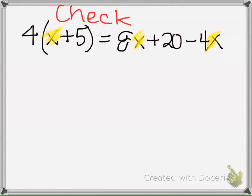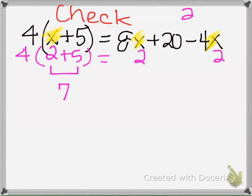So I'm going to randomly pick a number, I'm going to pick 2. So I'm going to put a 2 here for x, a 2 here for x, and a 2 here for x. And now I'm going to simplify each side. So here we have parentheses first, so 2 plus 5 is 7. And then this 4 is next to the parentheses, so it means times. So we get 28 on the left side.